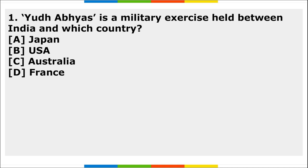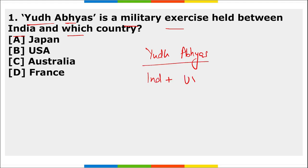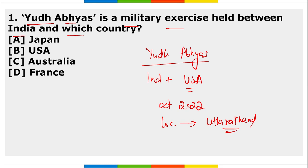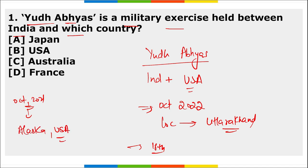First question: Yudh Abhyas is a military exercise held between India and which country? It is conducted between India and the United States of America. This exercise will be conducted in October 2022 in Uttarakhand. This will be the 18th edition of the exercise. The last edition took place in October 2021 in Alaska, USA.